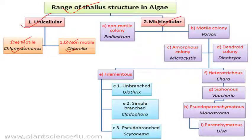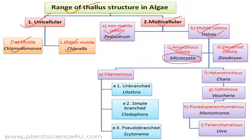Then we have multicellular forms. In multicellular, we have two types of colonies: non-motile colony, examples include Hydrodictyon, commonly known as water net, and motile colony, for example Volvox. Further, we have amorphous colony or dendroid colony. Amorphous means having no definite shape — example is Microcystis. Dendroid colony means cells combine to form a small microscopic tree-like structure — example is Dinobryon.